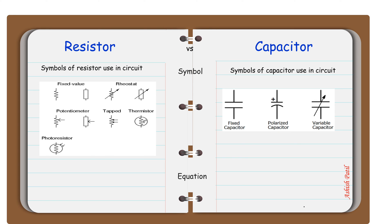Equation. The resistance of the resistor is given by voltage divided by current, R equals V by I. The capacitance of the capacitor is given by charge by voltage, C equals Q by V.